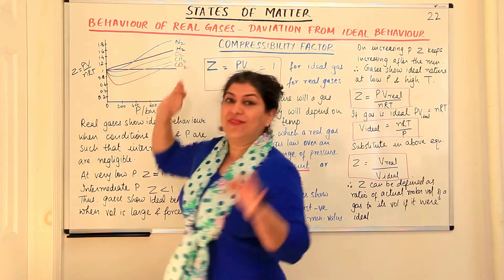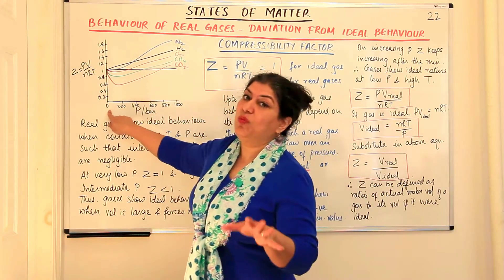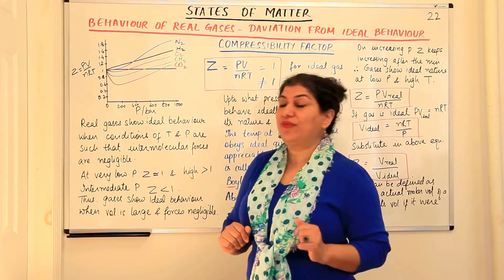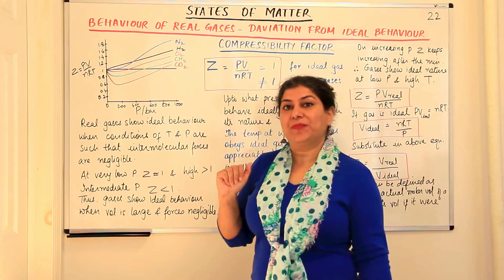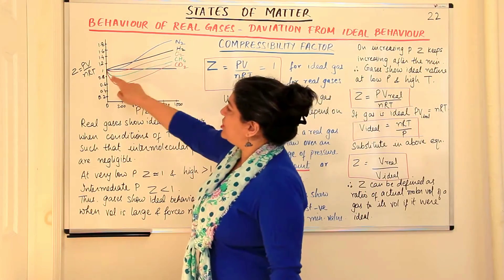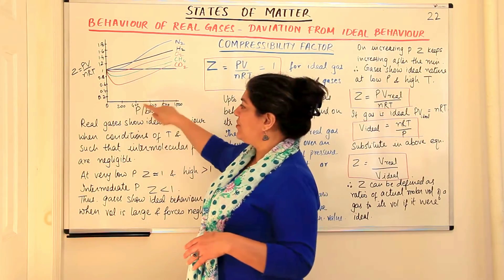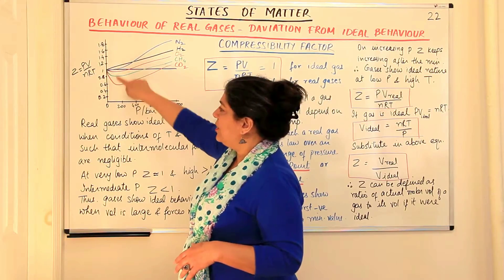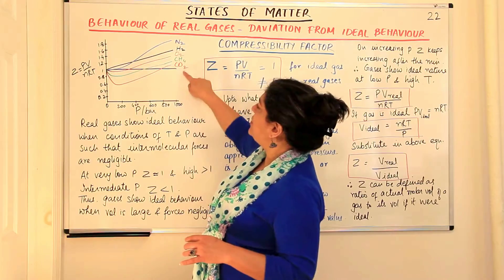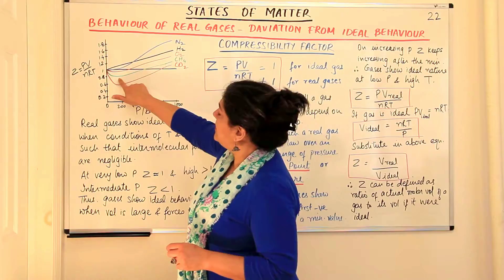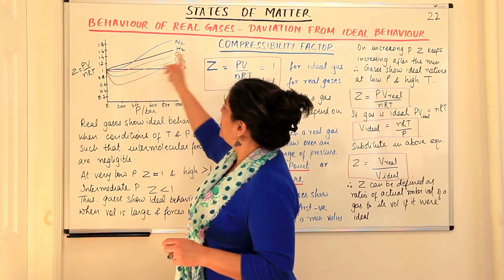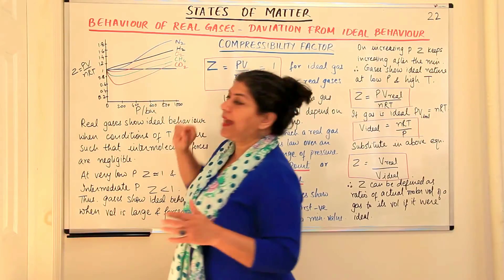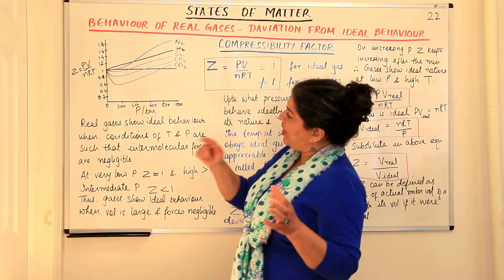All gases do show ideal behavior when the pressure is almost zero — at that point they all show a compressibility factor of 1. But as we increase pressure, some gases show positive deviation straight away. Some show negative deviation for a certain range, reach a minimum, then increase. The red curve is carbon dioxide with the lowest minimum, then methane, then oxygen. Hydrogen shows continuous positive deviation, while nitrogen stayed along the ideal gas line of Z = 1 for a certain range before showing positive deviation.